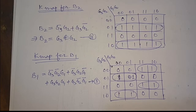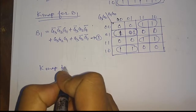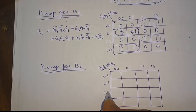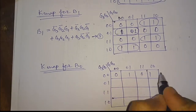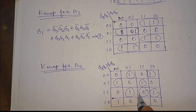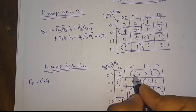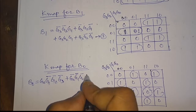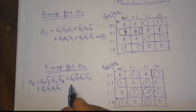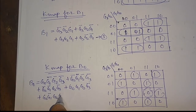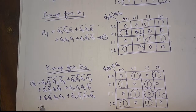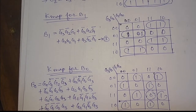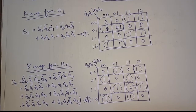Now we will make the K-map for B0. From the K-map we derive the expression for B0. This is equation number four. So we have found the expressions for B0, B1, B2, and B3.